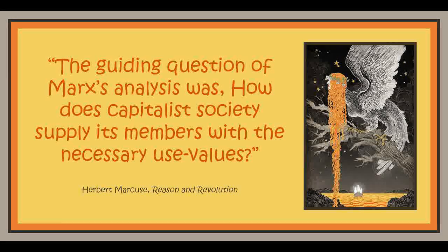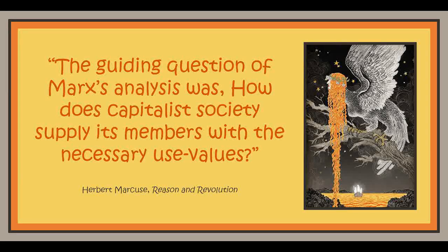The form in which this proportional distribution of labor operates in a state of society where the interconnection of social labor is manifested in the private exchange of the individual products of labor is precisely the exchange value of these products, and thus determines the proportional fulfillment of the social need. Marx calls this mechanism by which the commodity-producing society distributes the labor time at its disposal among the different branches of production the law of value. The different branches that have been made independent in the development of modern society are integrated through the market where the exchange value of the commodities produced yields the measure of the social need they satisfy. The supplying of society with use values is thus governed by the law of value, which has superseded the freedom of the individual.